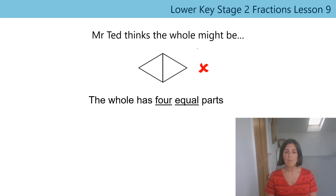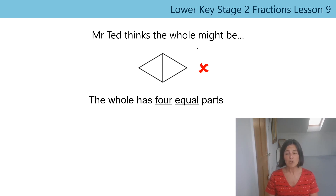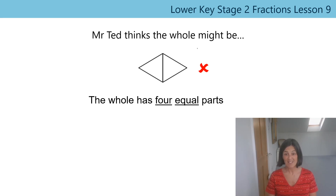Let's think about it. It says that the whole has four equal parts. I can see that he's drawn the same shape each time, so he's kept the parts equal, but has he drawn four of those parts? Let's just count: one, two. Oh dear — that's where he's gone wrong. Maybe you and he can learn from that mistake.